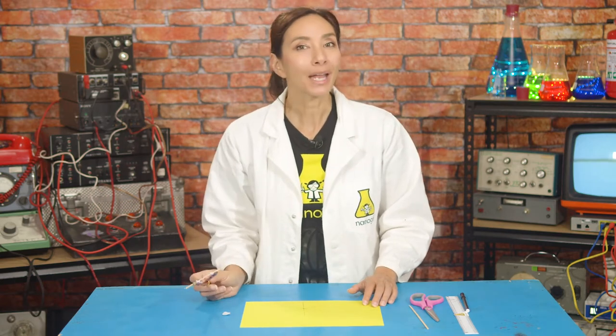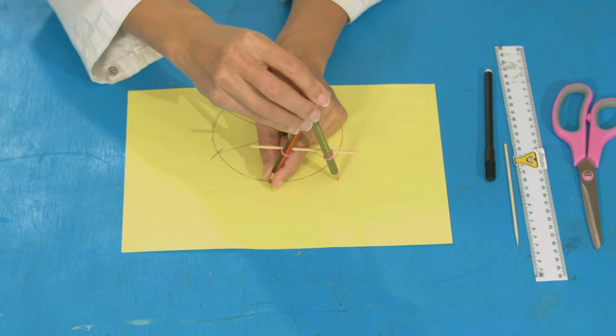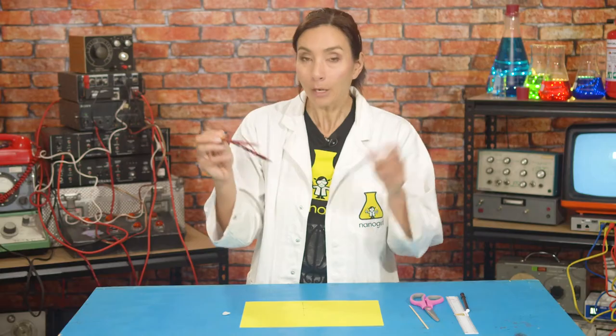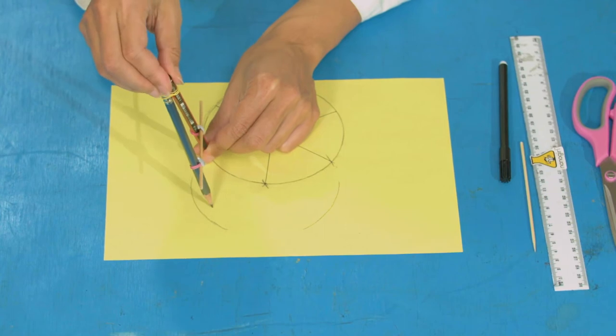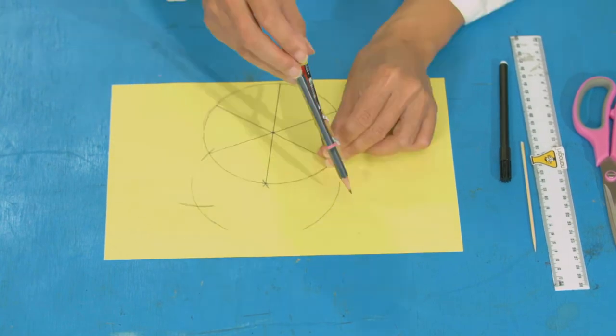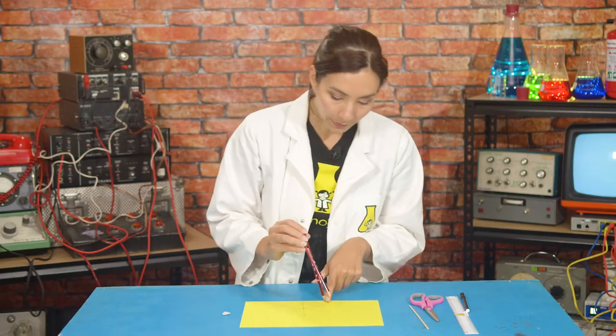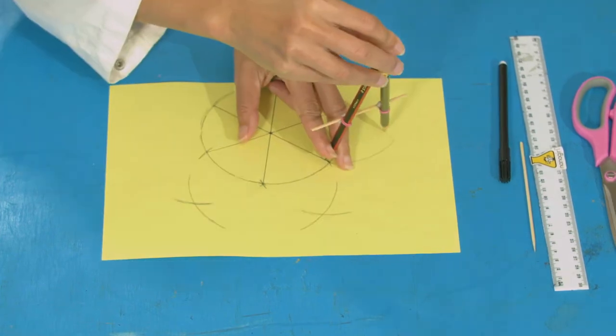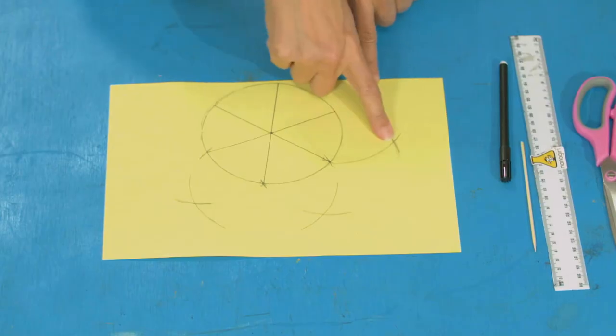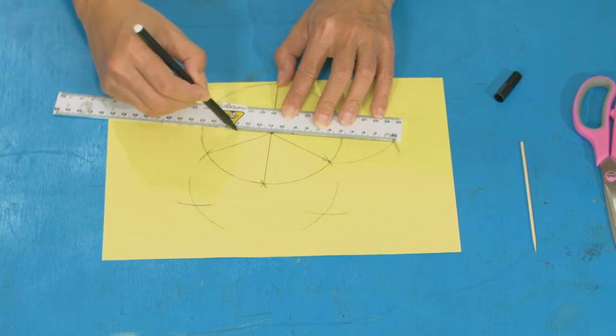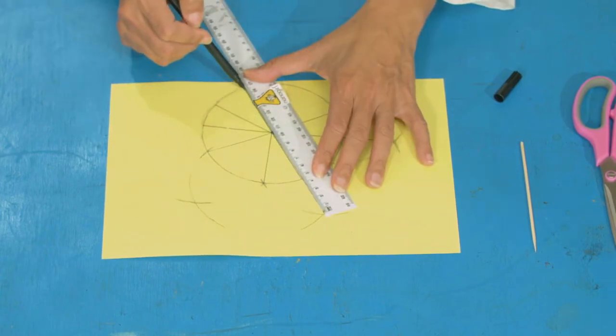Now we're going to divide each of these parts in half. Where one of your lines meets the circumference, put your compass point on there and draw an arc outside of the circle. Now move your point over to your next line and draw an arc again. You should see it crosses with the arc you made before. Now you can see that I have three crosses. I'm going to take a line through the center and draw it from that point through my circle. We've cut them in half again, so now we have 12 segments.